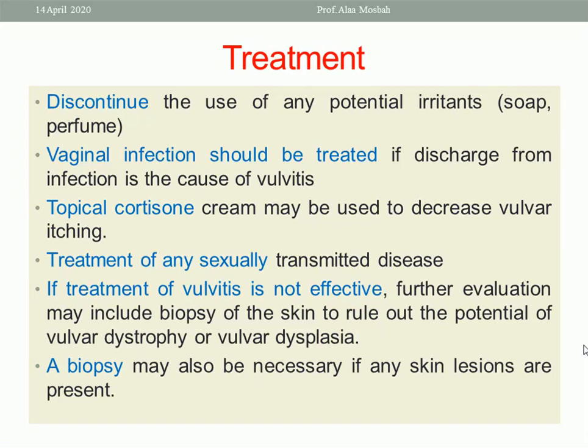Topical cortisone cream may be used to decrease vulval itching. Treatment of any sexually transmitted disease is important — like gonorrhea, by giving ceftriaxone injection, or syphilis, by giving penicillin injection. If treatment of vulvitis is not effective, further evaluation may include biopsy of the skin to rule out vulval dystrophy or vulvar dysplasia, which is a precancerous lesion. A biopsy may also be necessary if any suspicious lesions are present.